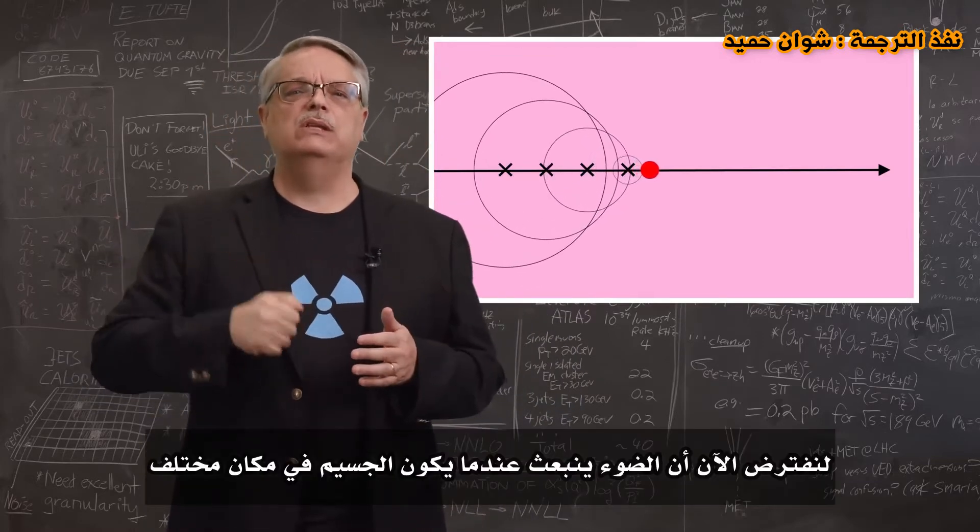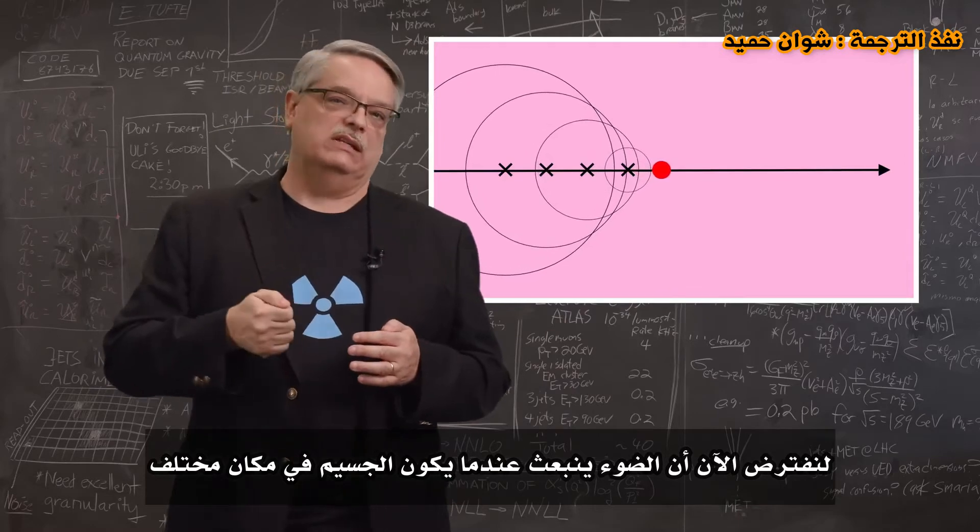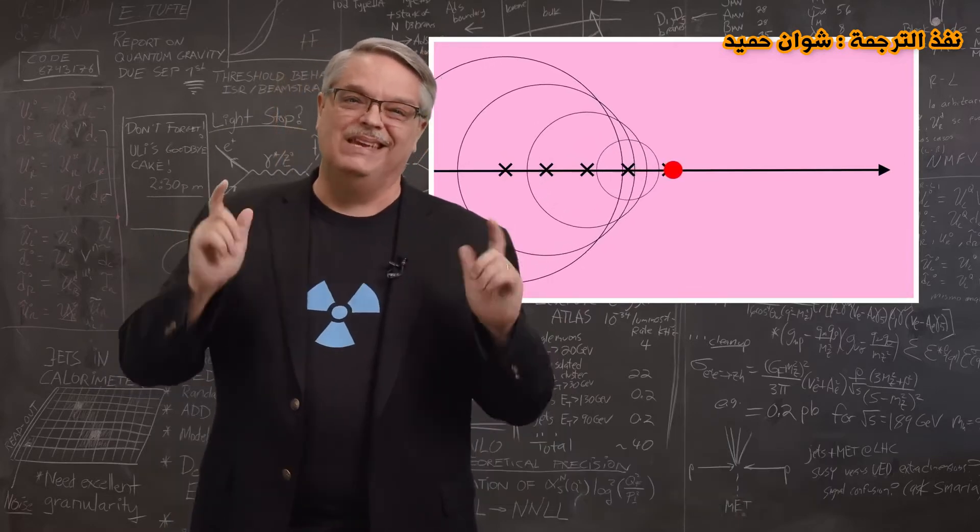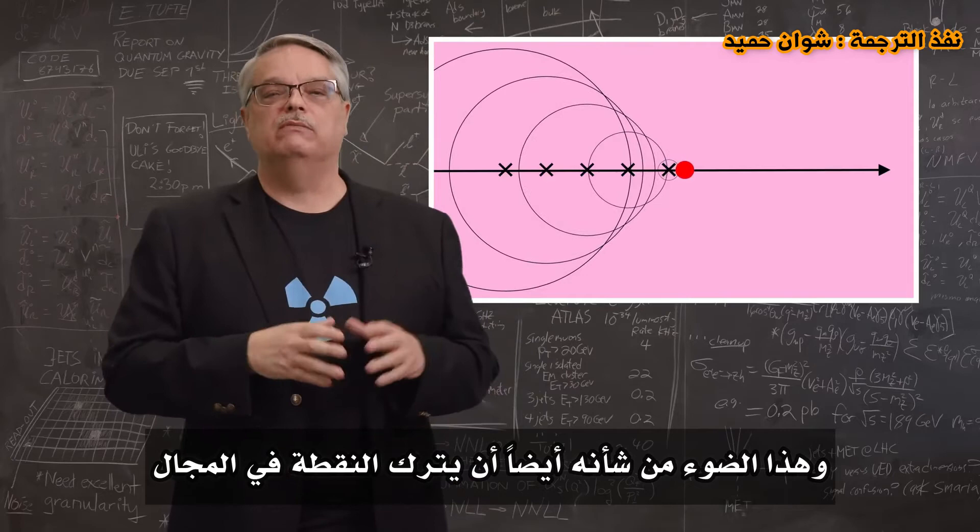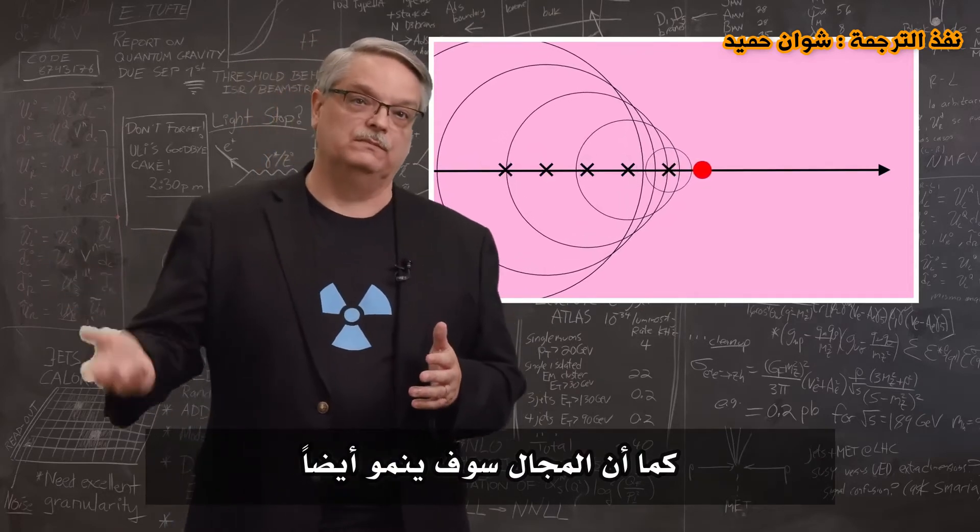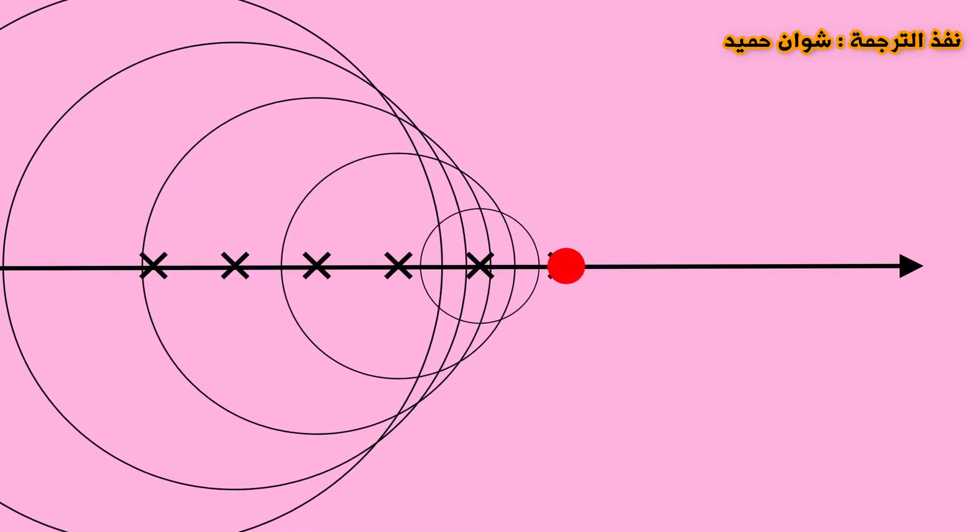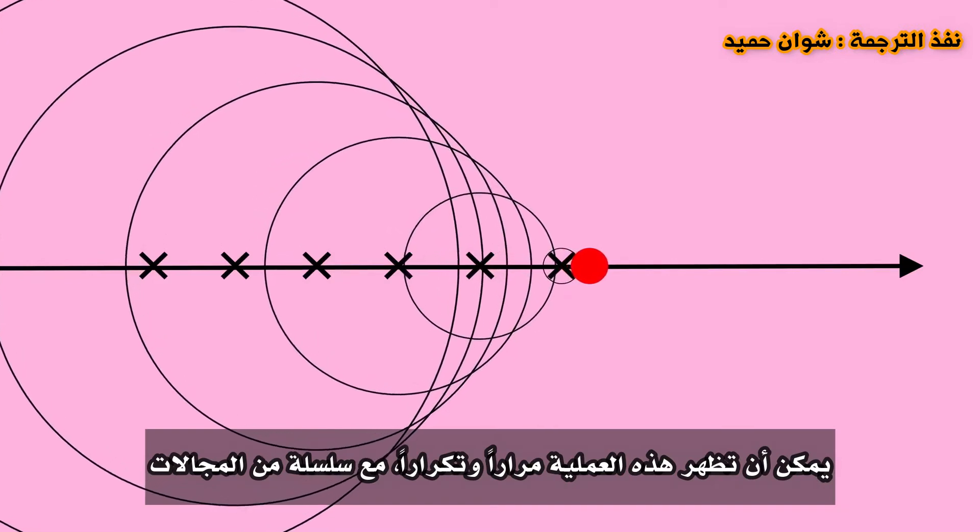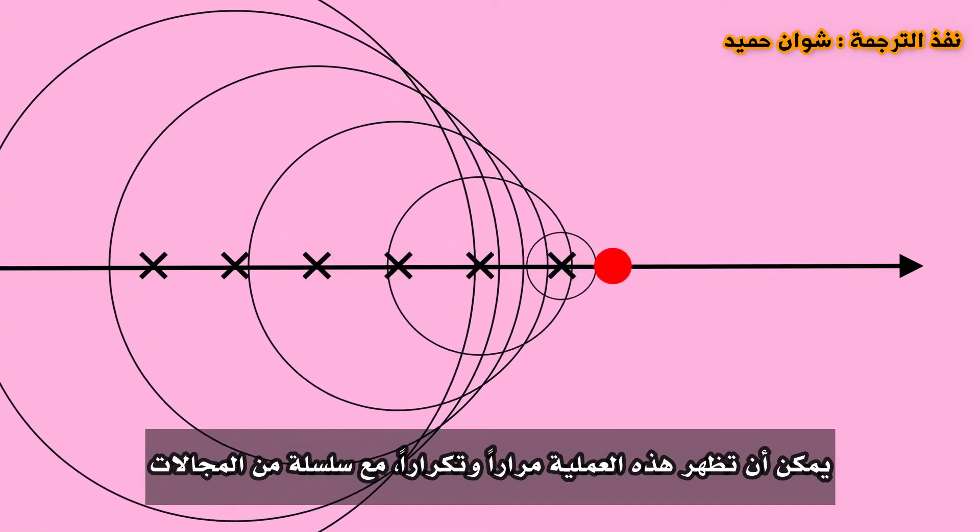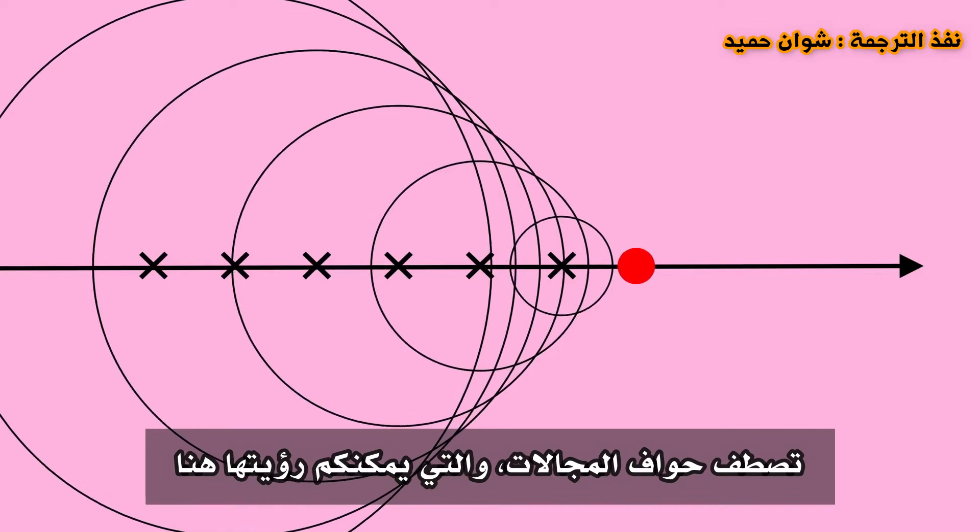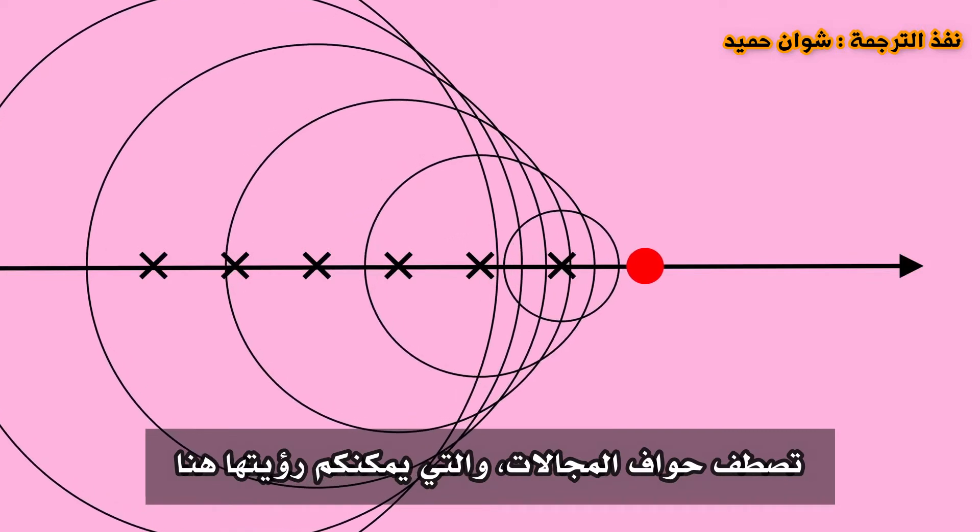Now suppose light is emitted when the particle is at a different location. That light will also leave the point in a sphere and the sphere will also grow. This process can appear again and again and again with a series of spheres. The edges of the spheres line up, which you can see here.